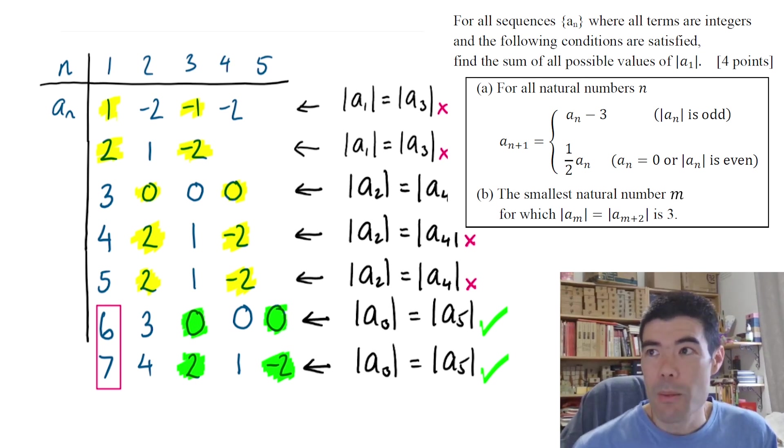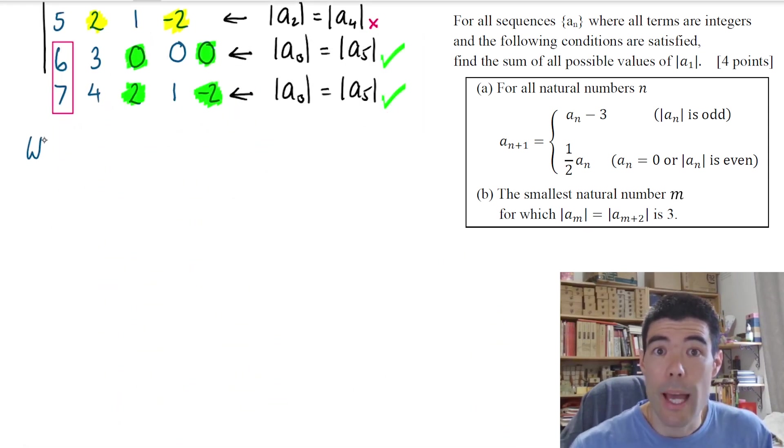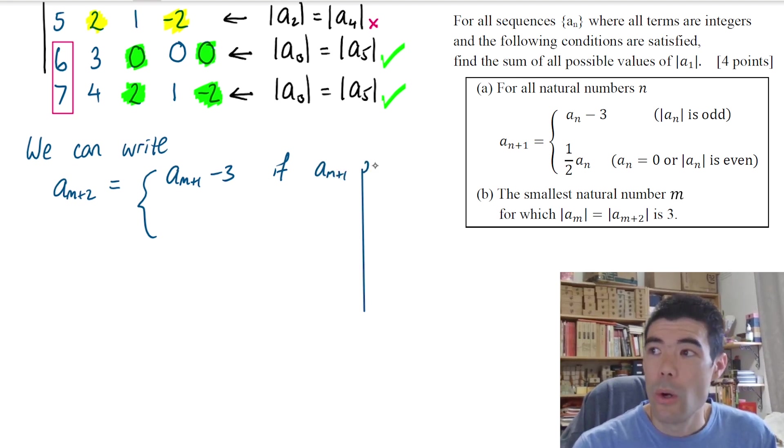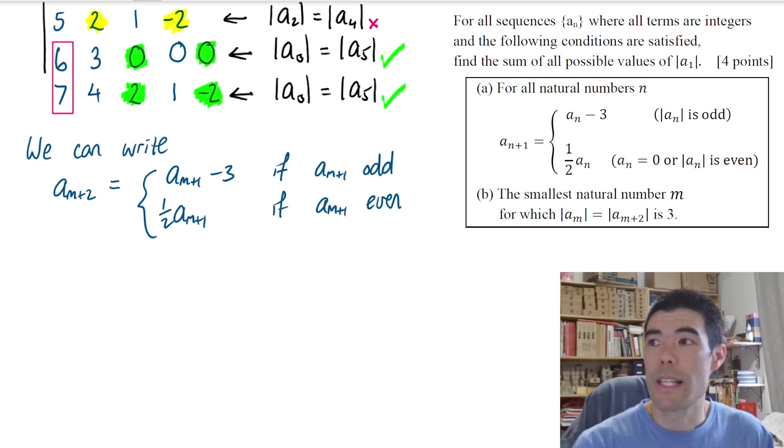But I want to find all possible values. So let's start thinking about this algebraically. We want a_m to be equal in absolute value to a_{m+2}. So let's think about how we can express a_{m+2} in terms of a_m. Well, to start with, we can express it in terms of a_{m+1}. And then we want to take each of those cases and then go one step further to express it in terms of a_m.